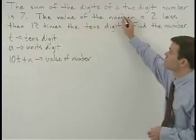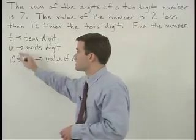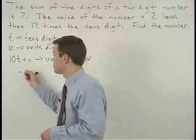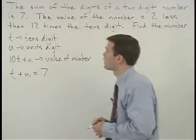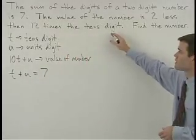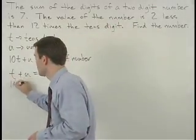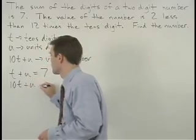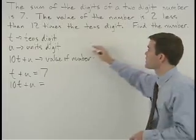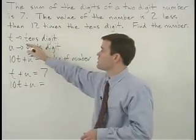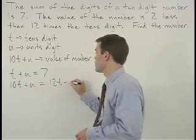Since our first sentence states that the sum of the digits of a two-digit number is seven, that's t plus u equals seven. Reading through our second sentence, the value of the number — that's 10t plus u — equals two less than twelve times the tens digit, so that's 12t minus two.